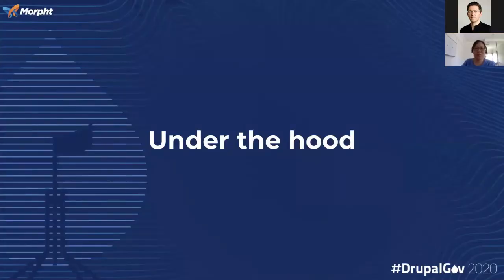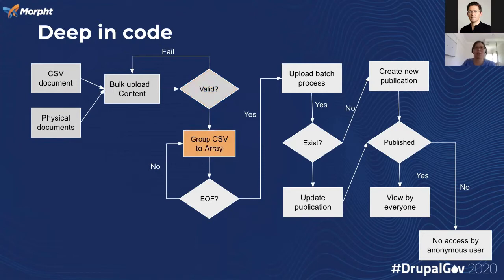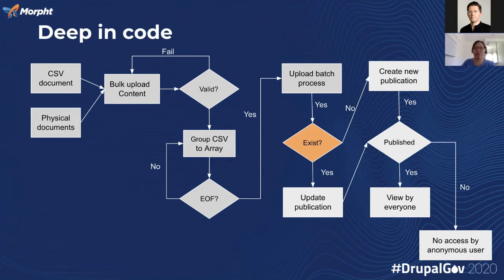So what's under the hood? Both CSV and physical files are uploaded to the bulk upload content type. Then we check if the CSV format is valid. If it's valid, we go straight to grouping the CSV to an array. Otherwise, we throw an error for the editor so they can correct the CSV file. This is where we create the loop to group each document by document name for managing file extensions easily. If it's end of files, we start the batch processing upload to create or update publications. If the publication exists, it will append and update the existing record. If the publication is new, it will create a brand new publication content. Then we check whether to publish the content — if no, it's for internal review only; if yes, it will be viewable by everyone.